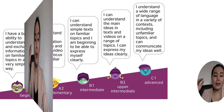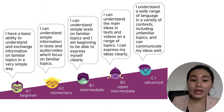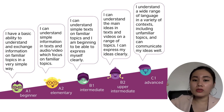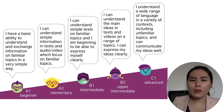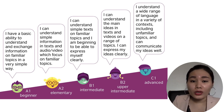Trình độ A1 là dành cho người beginner, dành cho người mới bắt đầu. Ví dụ ở đây mình có trình độ A1 beginner, A2 elementary, B1 intermediate, B2 upper intermediate, hoặc C1 advanced. Ở đây nó sẽ phân bậc rất là cụ thể các cái trình độ tiếng Anh của bạn.